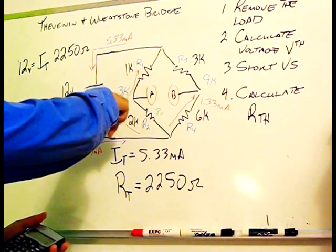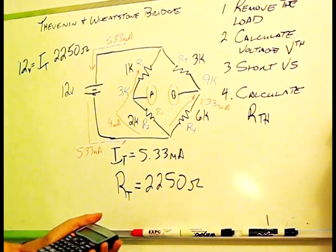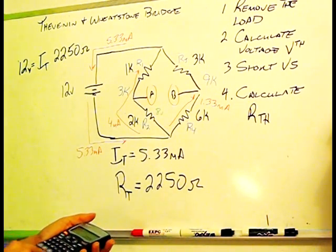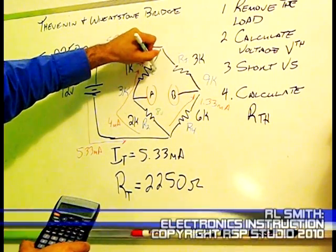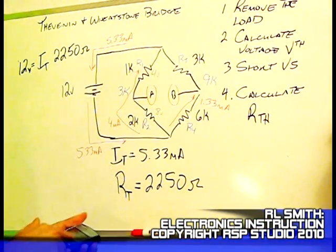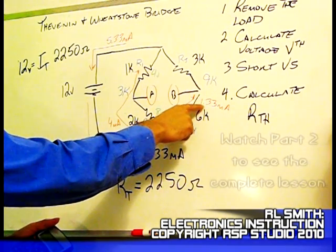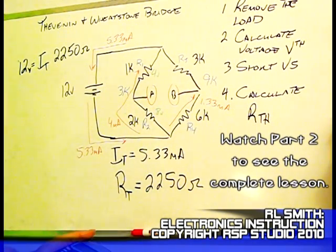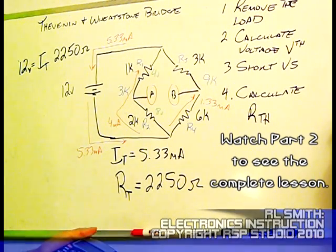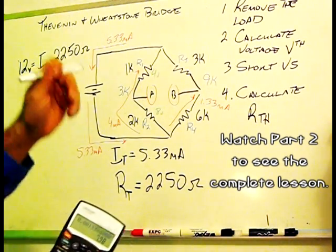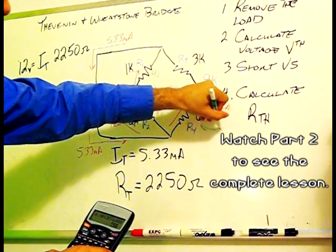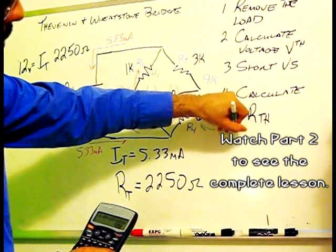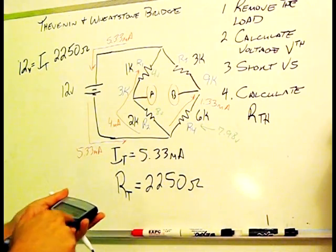Let's do the same for the other side. Here we have a different current, 1.33 milliamps. So 0.00133 times 6,000. 7.98. Here's where the precision comes in that I was telling you about. Here we've got a drop of 7.98. Now I want to address this in a minute, but let me get my other one here.